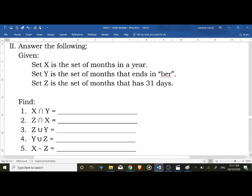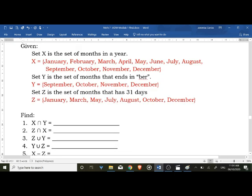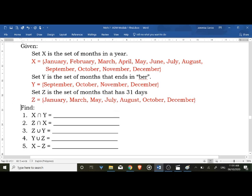Activity 2: The given set X is the set of months in a year, set Y set of months that ends in 'ber', set Z is the set of months that has 31 days. Okay class, so meron na po tayong guide dito na sets with its elements. So set X natin the 12 months, then the 'ber' months there are four, and then we have seven months with 31 days.